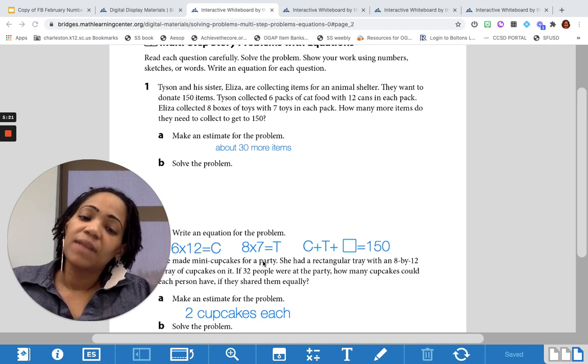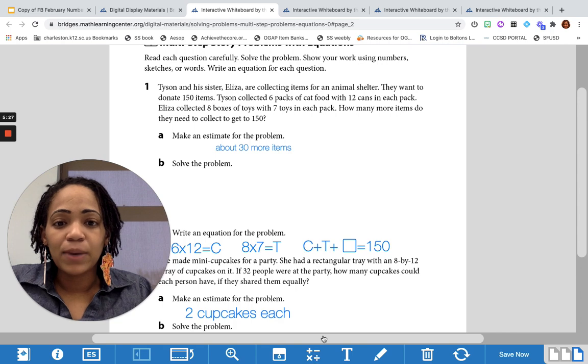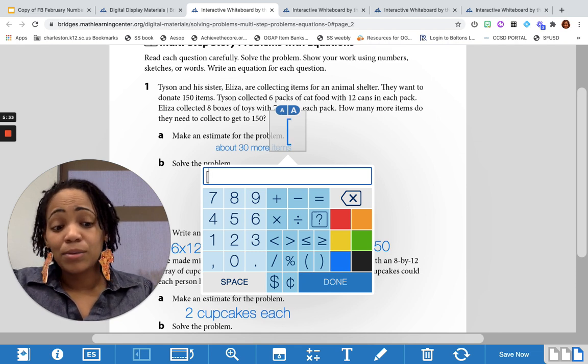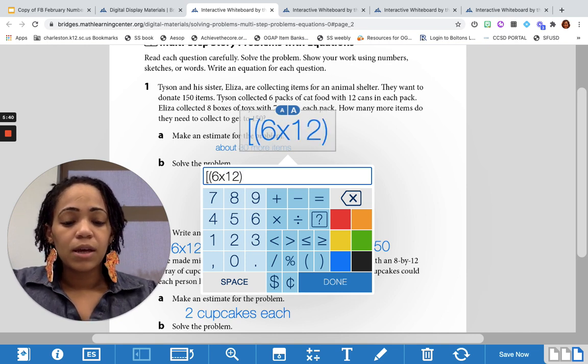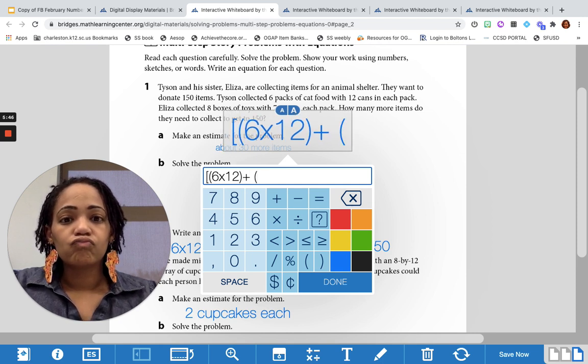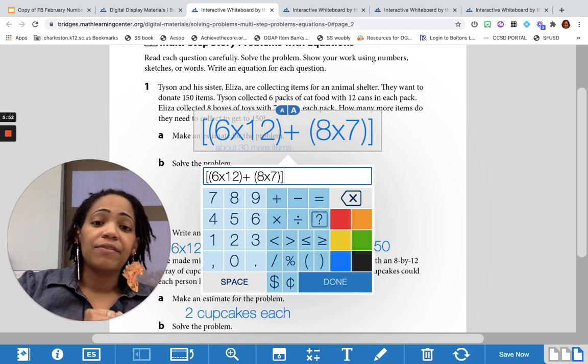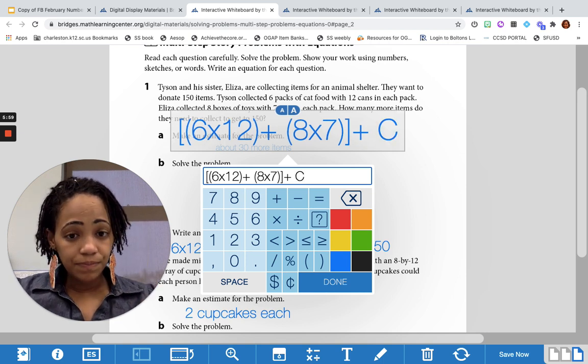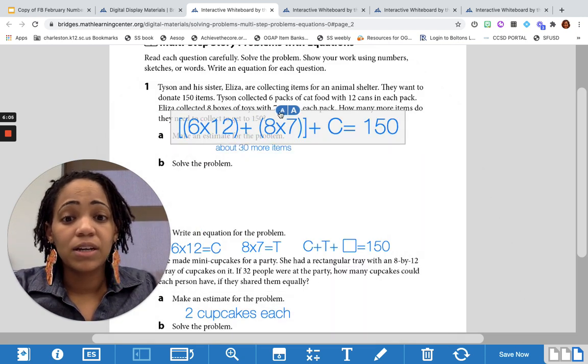Okay, so we got Tyson and his sister. They're collecting items for an animal shelter. They want to donate 150 items. Six packs of cat food with 12 cans in each pack, eight boxes of toys with seven toys in each pack. How many more items do they need to collect? So we know we got to do 6 times 12 and then 8 times 7 first. Watch what I'm going to do with my equation. I'm going to use some double parentheses. We got 6 times 12 plus 8 times 7.